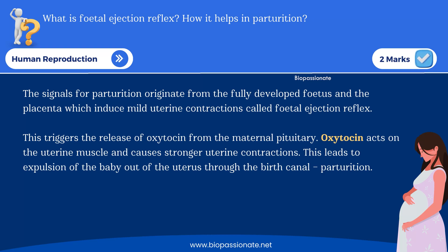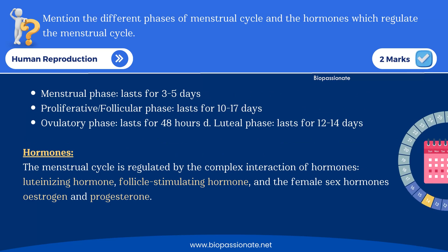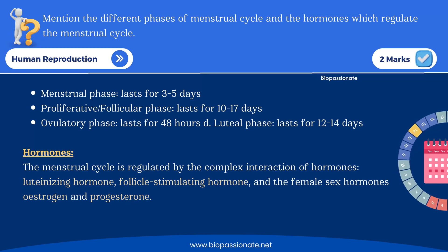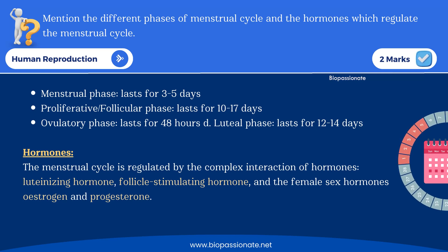Next question for two marks: what is fetal ejection reflex and how does it help in parturition? Parturition is the act of expelling the completely developed fetus from the mother's uterus. Another two-mark question: mention the different phases of the menstrual cycle and the hormones that regulate it. The four phases are: menstrual phase, proliferative phase, ovulatory phase, and luteal phase.